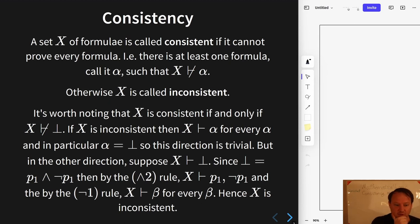So let's first show that if it is inconsistent then it cannot prove bot or falsum. And this is really immediate, because if it is inconsistent it can prove everything, therefore it can prove falsum.